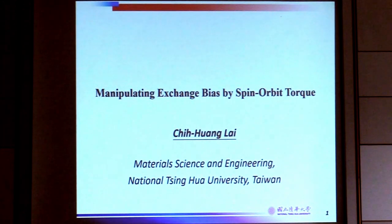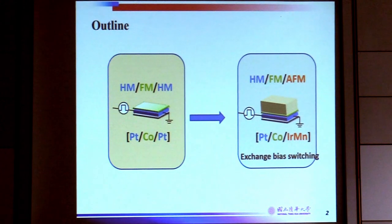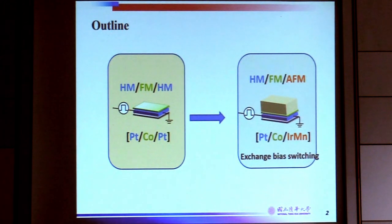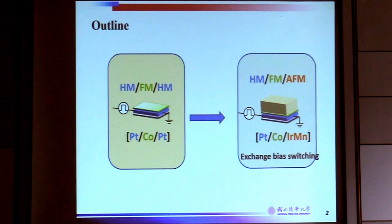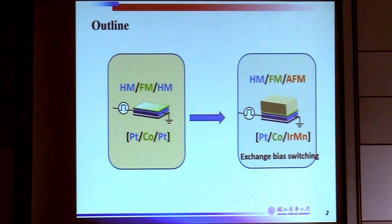I'm going to talk about the manipulation of exchange bias by spin-orbital torque. I'll start with ferromagnetic layers sandwiched by two heavy metals, showing how spin-orbital torque switches the ferromagnetic layers. We then replaced one of the heavy metals with an antiferromagnet. The interface plays a very important role for spin-orbital torque, and with the addition of the antiferromagnet, we expect to see exchange bias established. I will show that by using spin-orbital torque, we can not only switch the ferromagnetic layers but also switch the exchange bias.